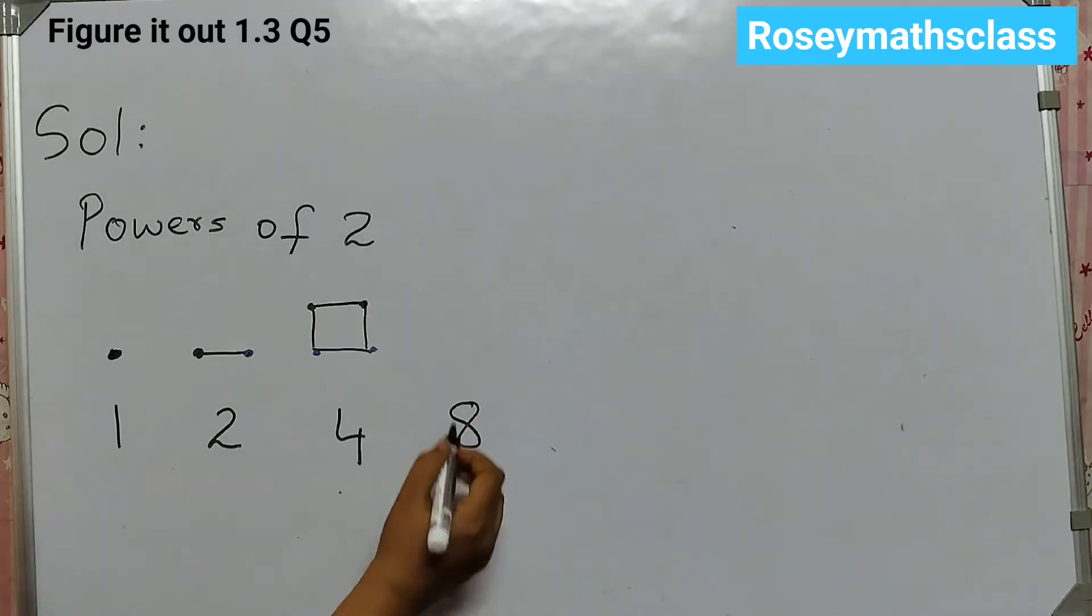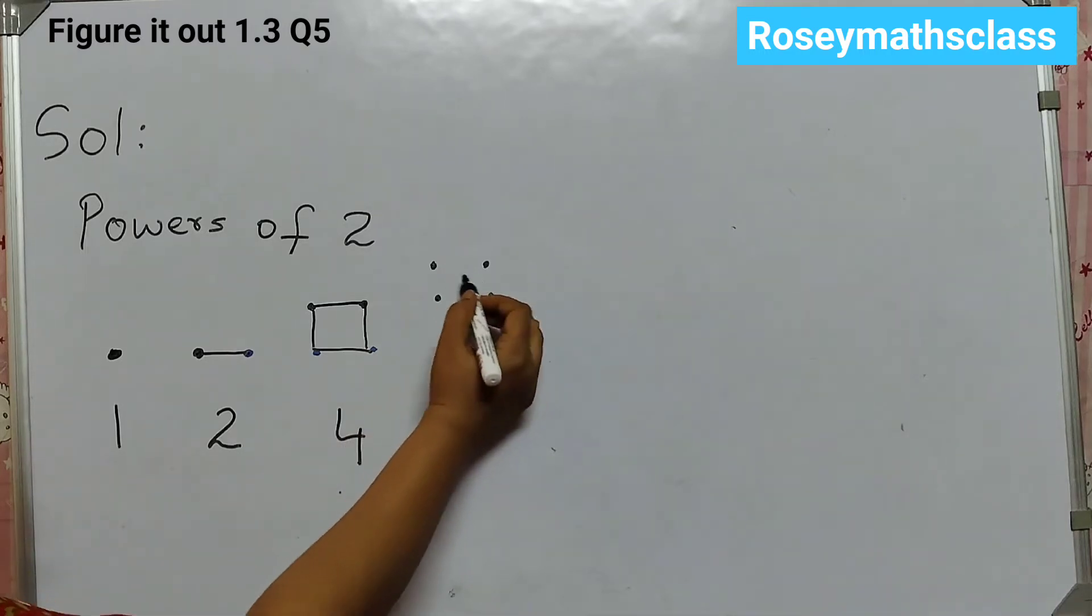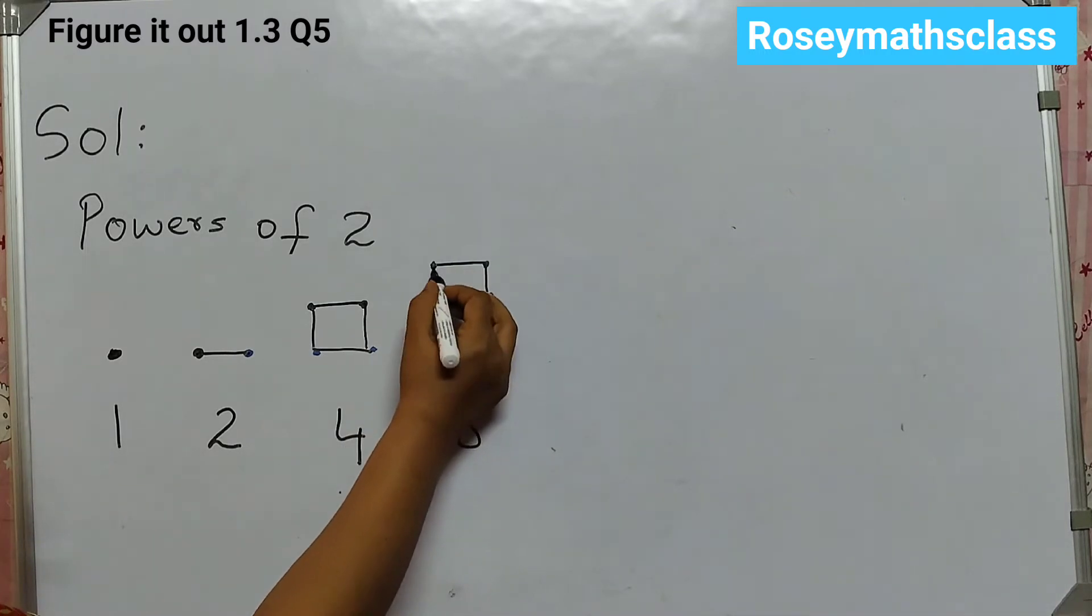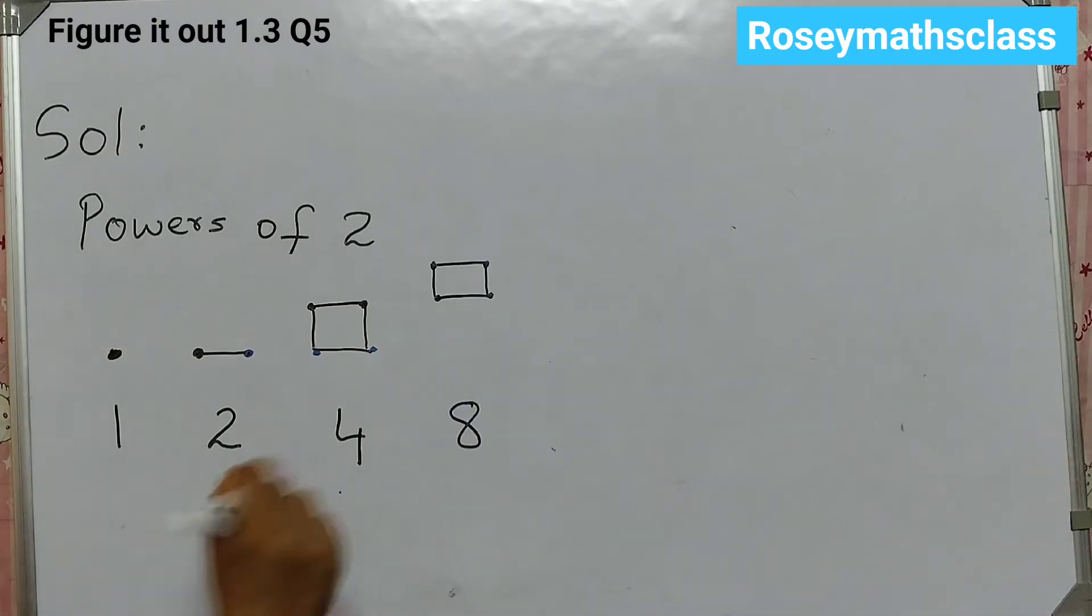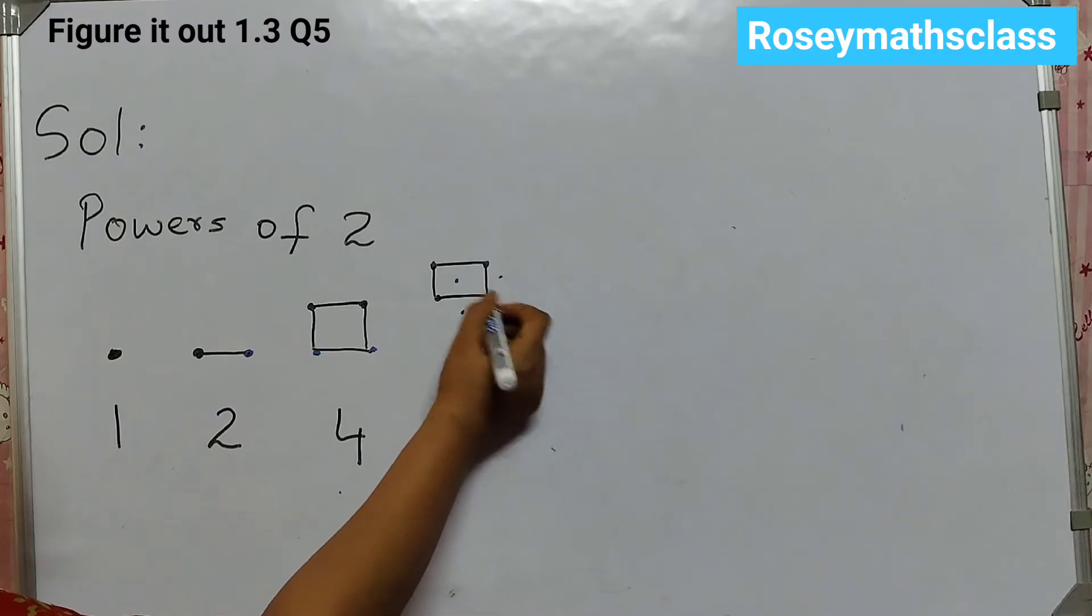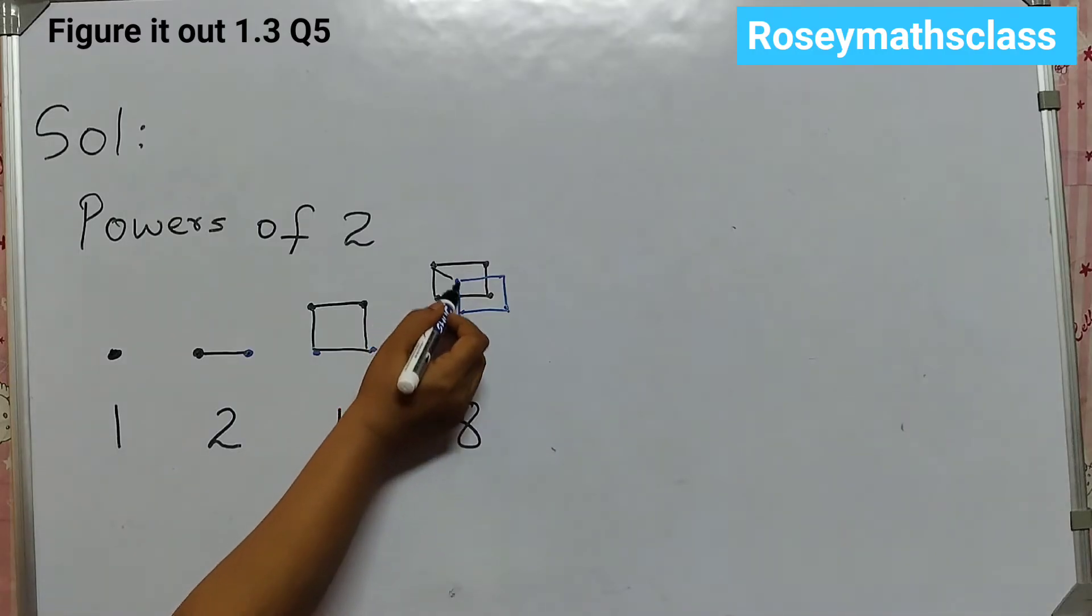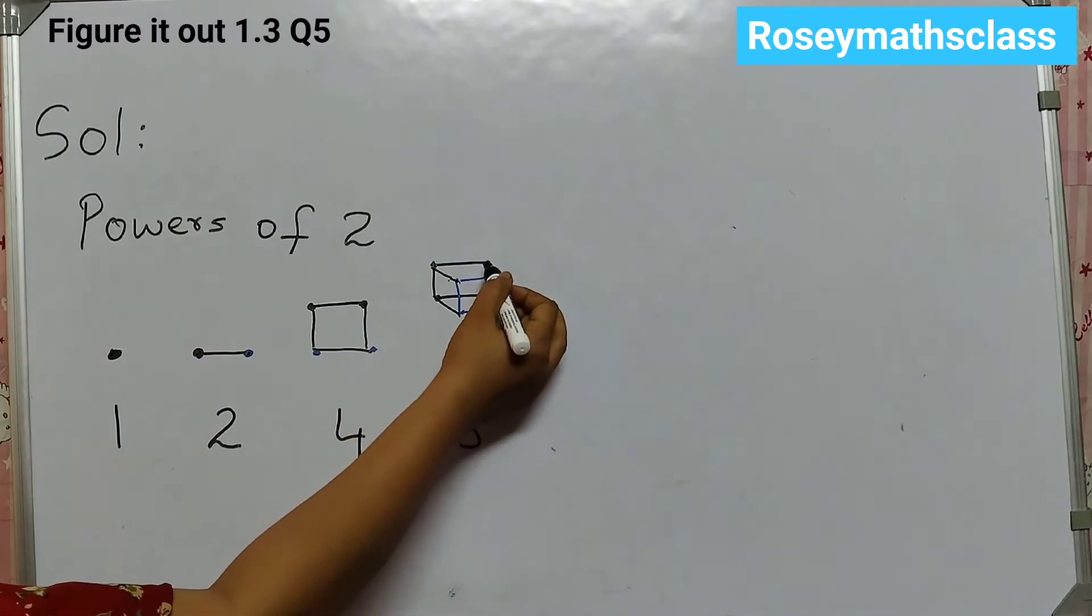The next number is 8. So 4 black dots. And then we can just join this. We have 8, so 4 more dots. That will be 1, 2, 3, 4. And then join this. This to this. Like this.